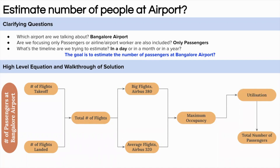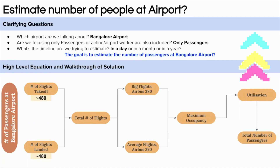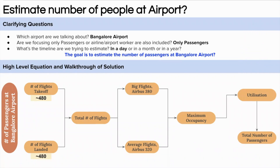Now let's start putting in those numbers. For the total number of flights taking off and landing from Bangalore airport, we have already created a video on this — I will put the link in the i-button and the description box, so it is highly recommended you watch that video first. From that video, we estimate the total number of flights taking off and landing is around 480. Assuming takeoffs and landings are equal, 480 flights take off and 480 land, giving a total of around 960 flights.